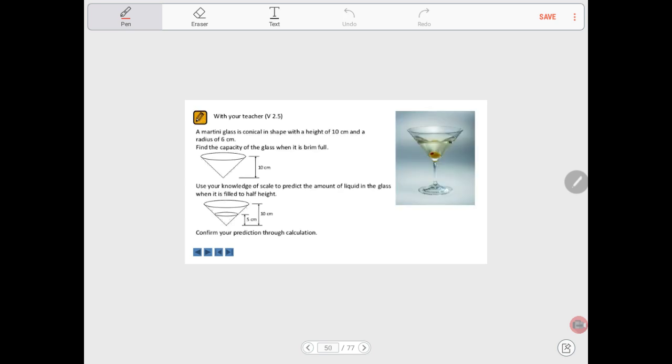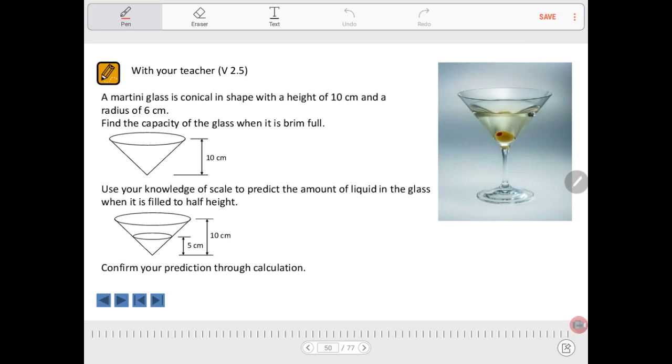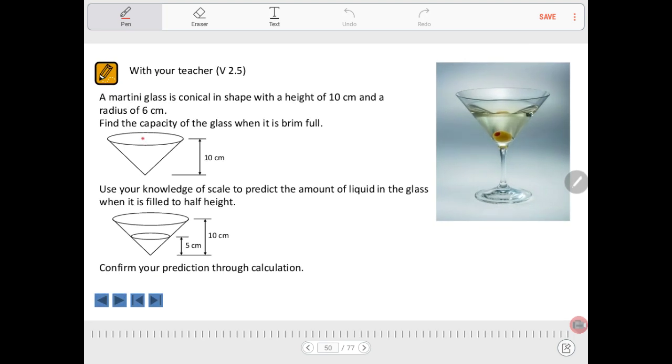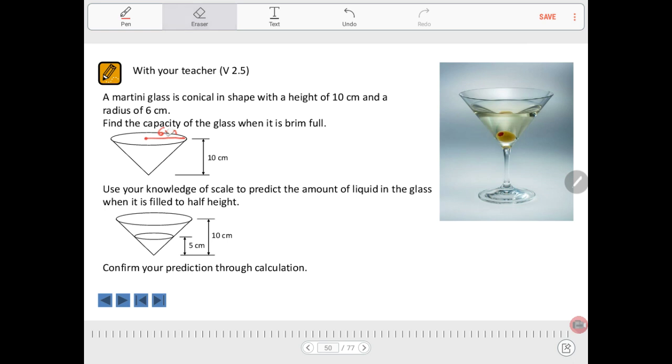So a martini glass, which is conical in shape, that means it's a cone, has a height of 10 centimeters and a radius of 6 centimeters. I'll just put that on the diagram. 6 centimeters means from the center to the edge of the circle for a radius. Now in this, they're asking about capacity. I'm going to cross that out. We'll come back to this and do it for capacity. We're going to do volume here first.